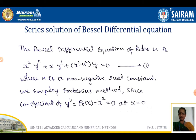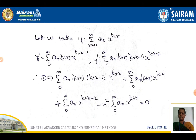Series solution of the Bessel differential equation: the Bessel differential equation of order n is x²·y'' + x·y' + (x² − n²)·y = 0, called equation 1, where n is a non-negative real constant. We employ the Frobenius method since P0(x) = x², which equals 0 at x = 0. We take y = Σ ar·x^(k+r), y' = Σ ar·(k+r)·x^(k+r−1), and y'' = Σ ar·(k+r)·(k+r−1)·x^(k+r−2).